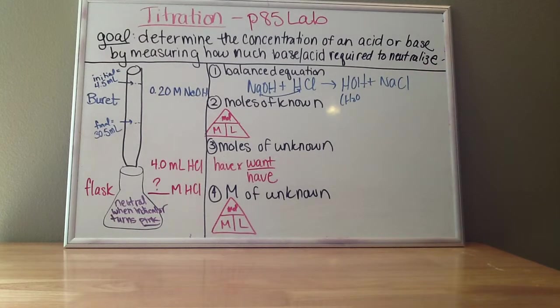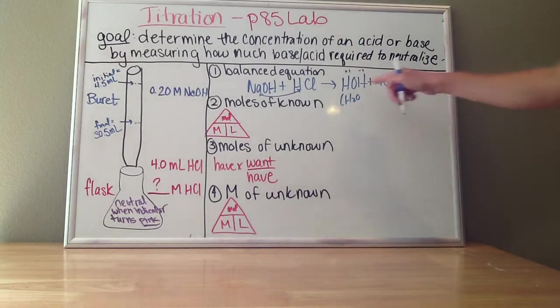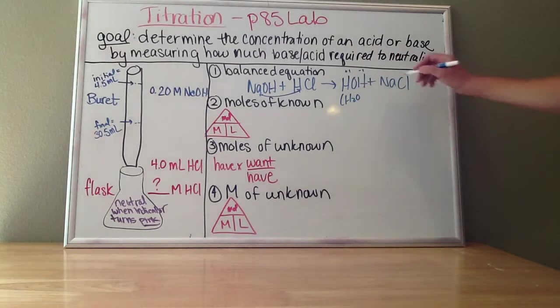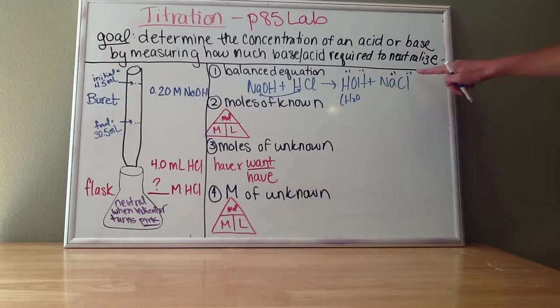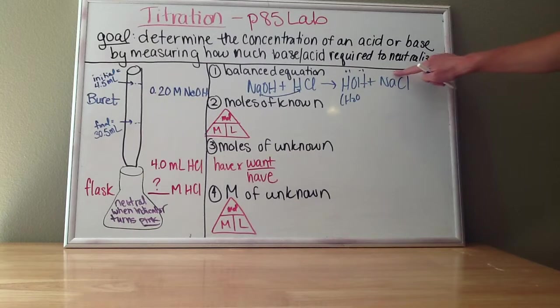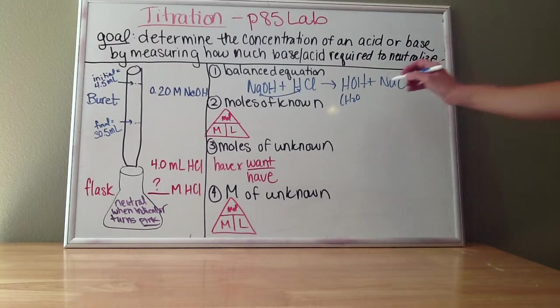You should always check for charge. H is +1, OH is -1, so no subscripts needed there. Sodium is +1, chlorine is -1, so no subscripts needed there. So I don't need any subscripts and I don't need any coefficients in this equation. This is one of the more straightforward ones.